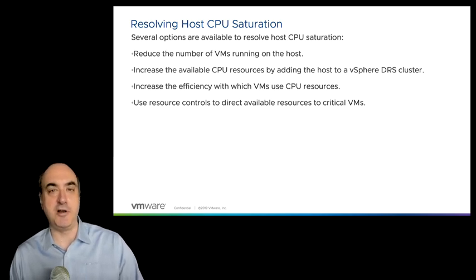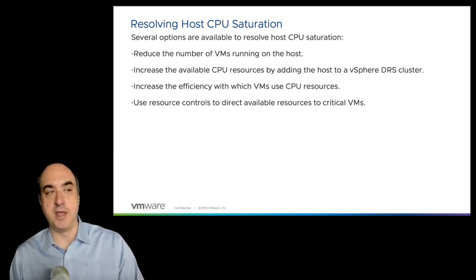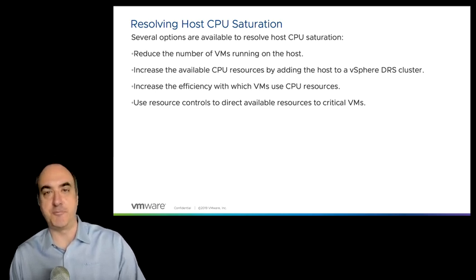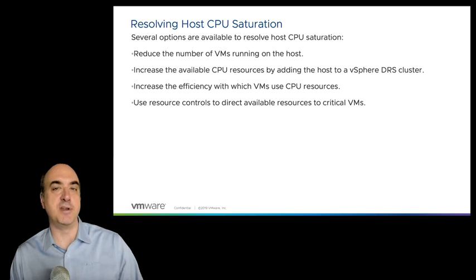Maybe you don't have that option — maybe all your ESX servers are already CPU saturated. Ideally, you could add more hardware by increasing available CPU resources, perhaps by adding a new host to your environment. Or you could try to increase the efficiency of how VMs use CPU resources, though that's less common since it requires consulting the vendor. Another option is to use resource controls to prioritize workloads — you can give a higher percentage of resources to more critical workloads.